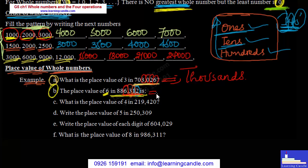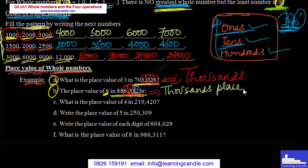The place value of six in this number is thousands place. Yes — the place value is thousands place.